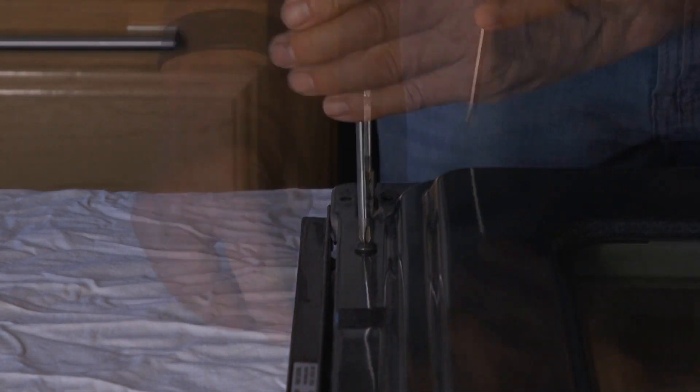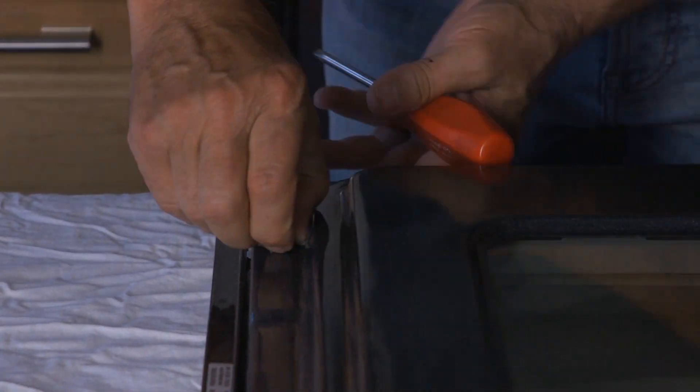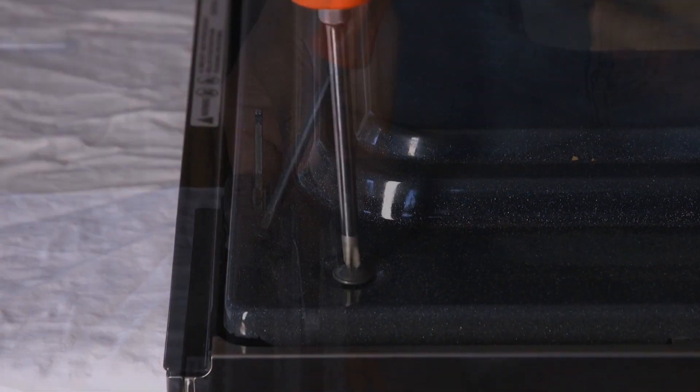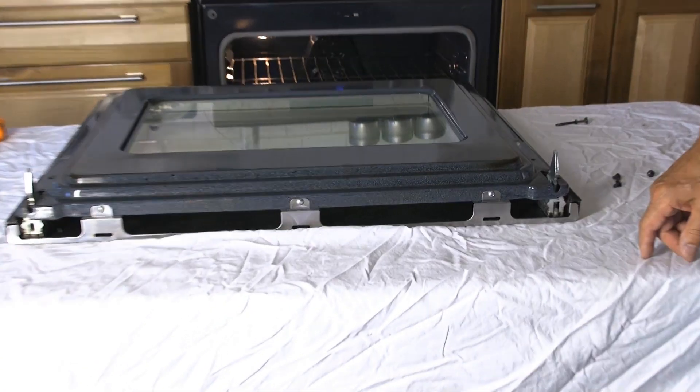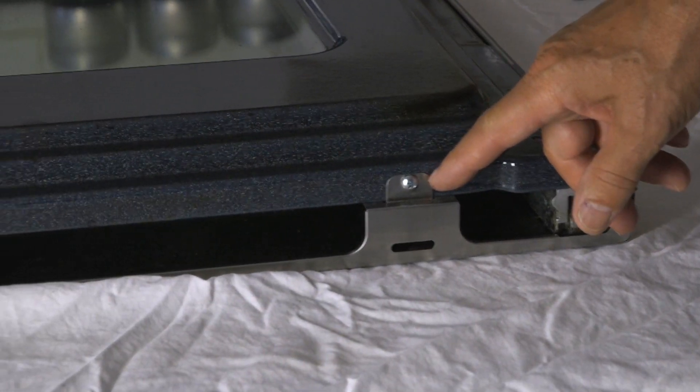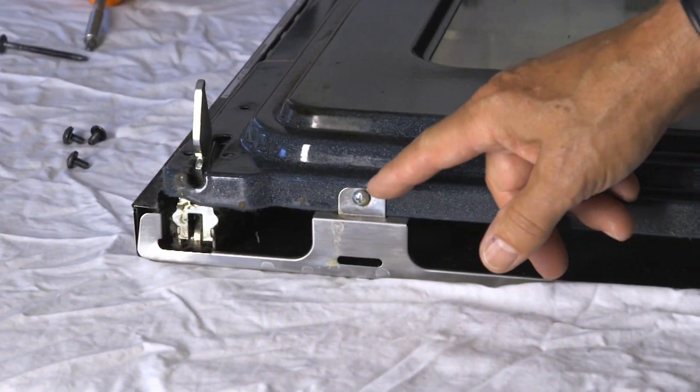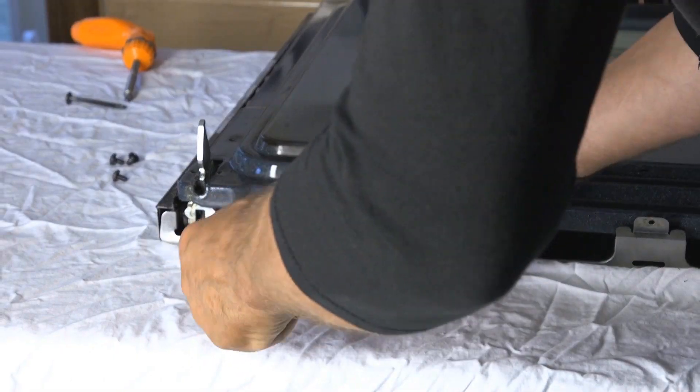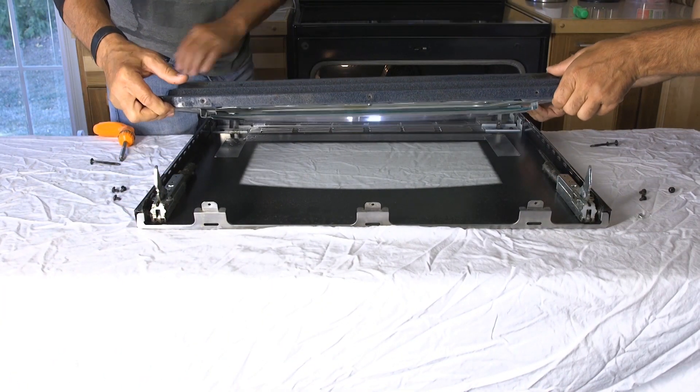There are 8 screws on the back panel to remove with a Phillips screwdriver. There are also 3 screws on the bottom edge of the door to be removed.